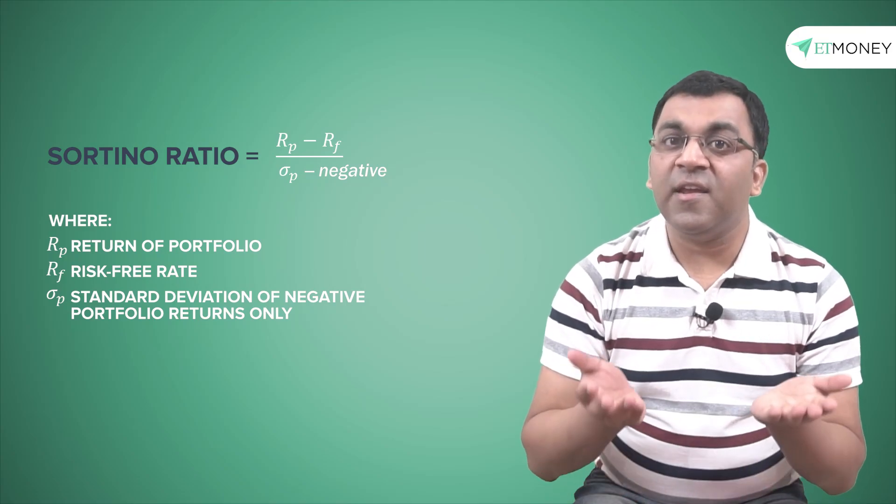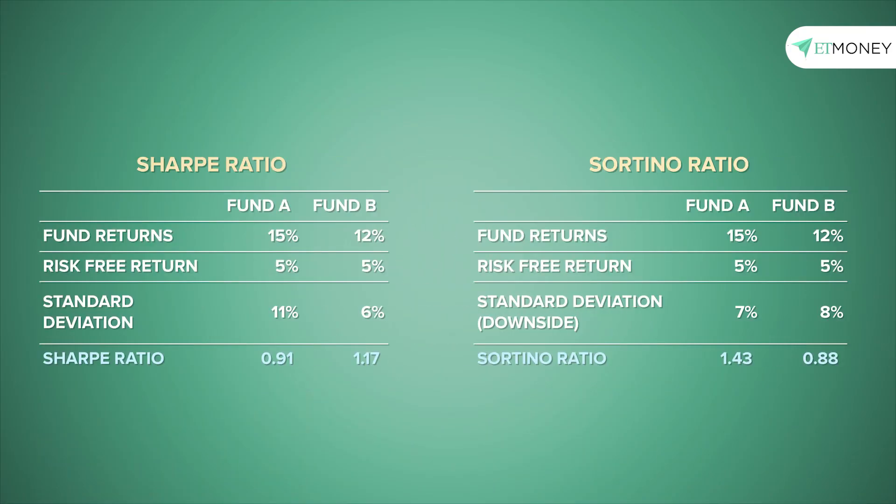For instance, in a previous example, we used a total standard deviation of 11% and 6% to come up with a Sharpe ratio of 0.91 and 1.17 respectively. Say we now apply the downward standard deviations for these funds at 7% and 8%. In this case, and unlike what we saw with the Sharpe ratio, the fund A's Sortino ratio will be far higher than fund B's, at 1.43 versus 0.88.